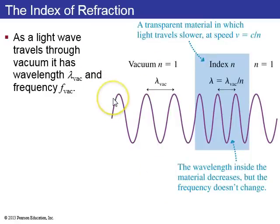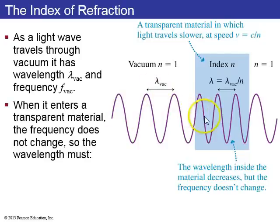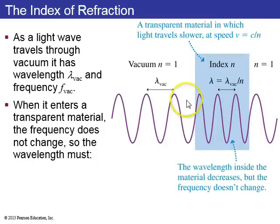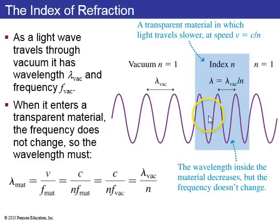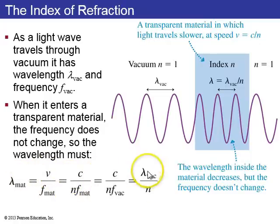As light travels through a vacuum, it has some vacuum wavelength and vacuum frequency. When it enters a transparent material, the frequency of the oscillations does not change — the electric field oscillates outside and inside the glass with the same frequency. But since the speed decreases, and lambda equals speed divided by frequency, the wavelength must decrease as the speed decreases.